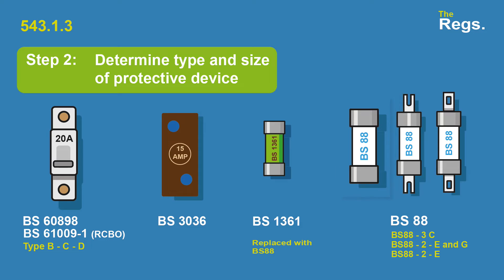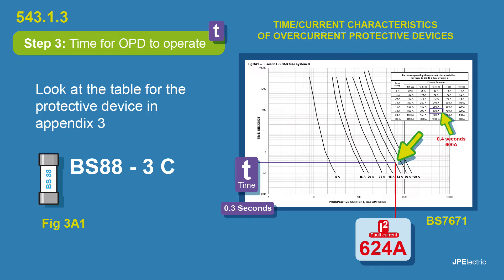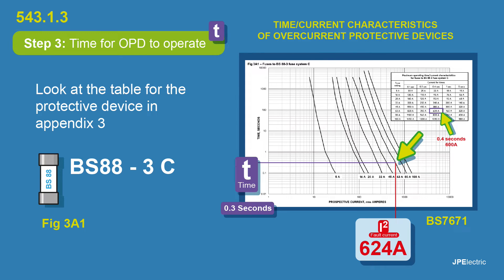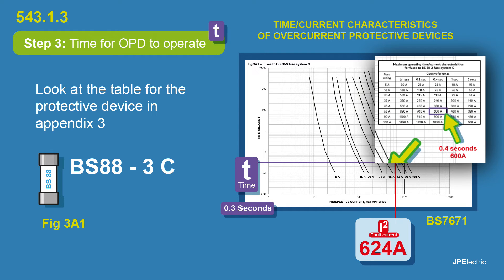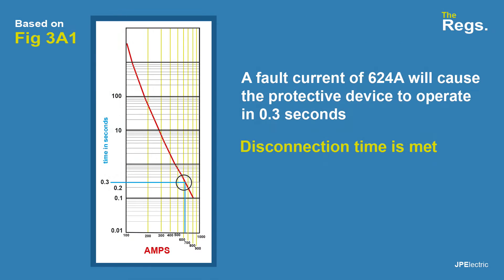We can now look up the disconnection times for this type of device. Step three: the time for the overcurrent protective device to operate. We'll find this in Appendix 3, the time-current characteristics for overcurrent protective devices — figure 3A1, which is fuses to BS88-3. Following along the bottom line for prospective current in amps, we're looking for 624. Going up to the diagonal line and across, a fault current of 624 amps will operate the device in 0.3 seconds. The table shows that for 0.4 seconds it would be 600 amps, but since we've got an actual measured fault current of 624 amps, that trips this BS88 fuse in 0.3 seconds.